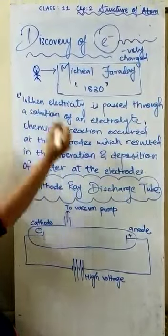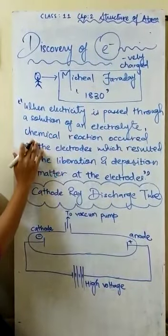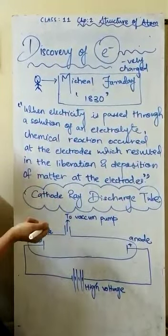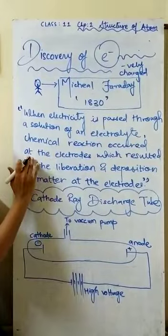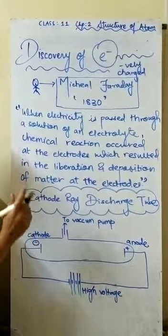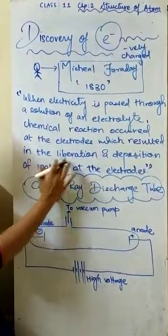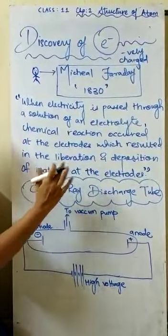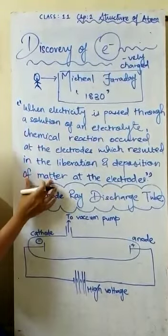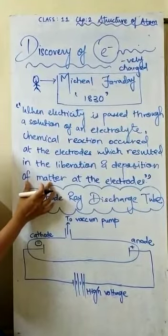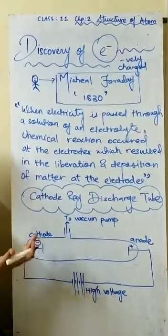When electricity is passed through a solution of an electrolyte, jub electricity electrolyte se pass hoti hai, a chemical reaction occurred at the electrodes, which resulted in the liberation and deposition of matter at the electrodes. Class 10th me bhi electrolysis kar chuke hain — ye Michael Faraday ka law hai, aur aage 12th me aur bhi laws learn karenge.